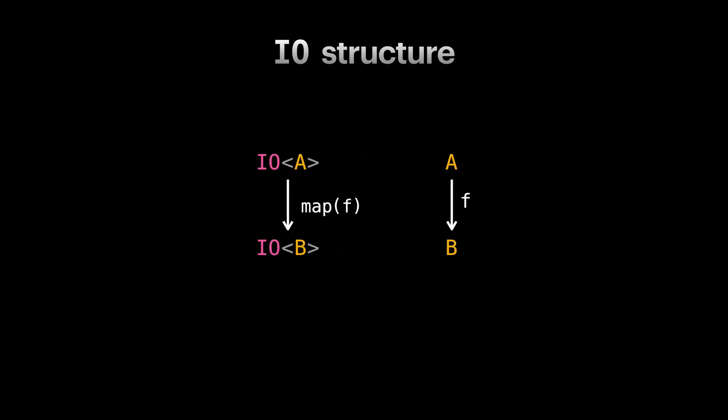So we could come up with a map function that receives a function from A to B and lifts that to a function from IO of A to IO of B. In other words, IO is a functor and more precisely, a covariant functor.